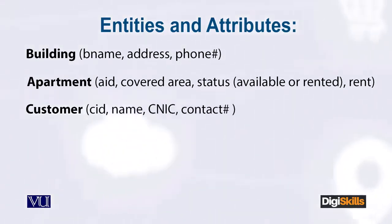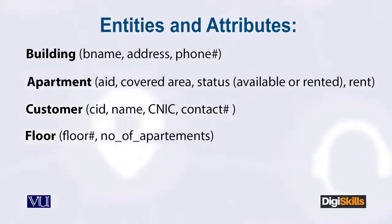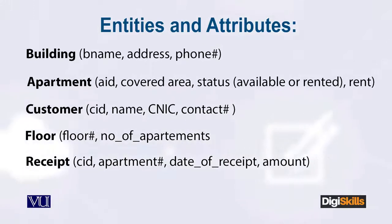For customer: customer ID, name, CNIC, and contact number — for every entity I've written, you should add three more attributes yourself. For floor: floor number, and number of apartments — and many more attributes are possible. For receipt: which customer, their rent, their ID, apartment number, date of receipt, and amount.